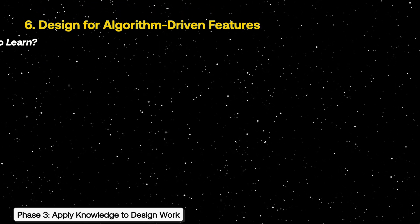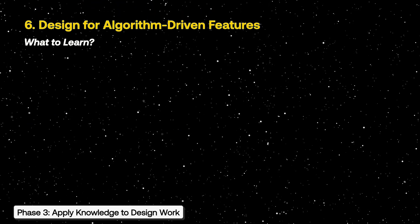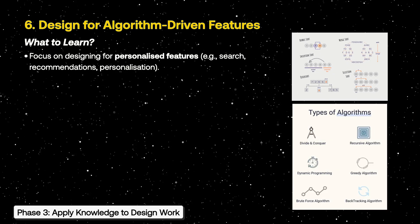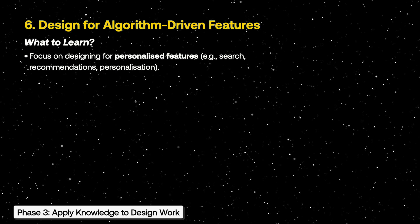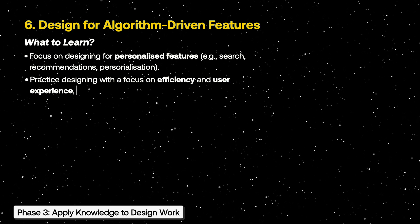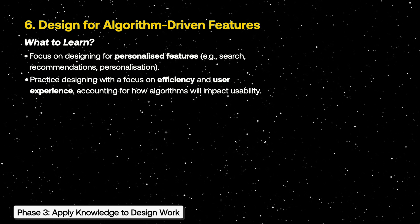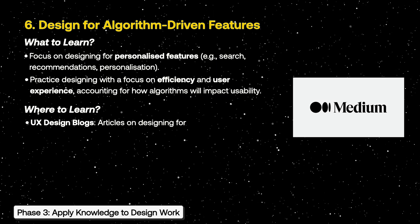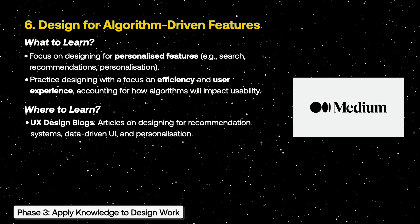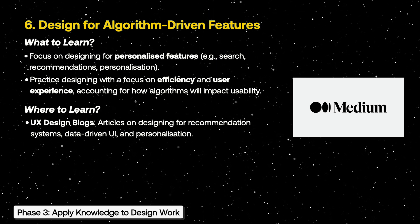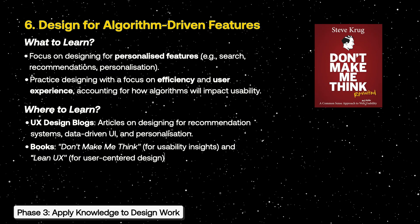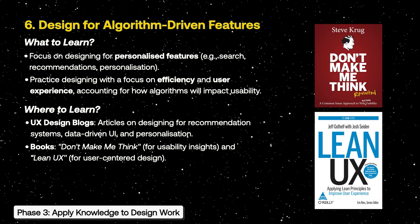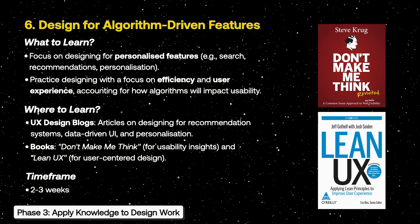Still in the third phase: try to design algorithm-driven features from your own perspective — things like search and recommendations. Practice with your own data and user experience, and practice using algorithms efficiently. Search for data-driven design UI on Medium, study blogs, and read books like Don't Make Me Think and Lean UX. Spend about 2-3 weeks on this phase.